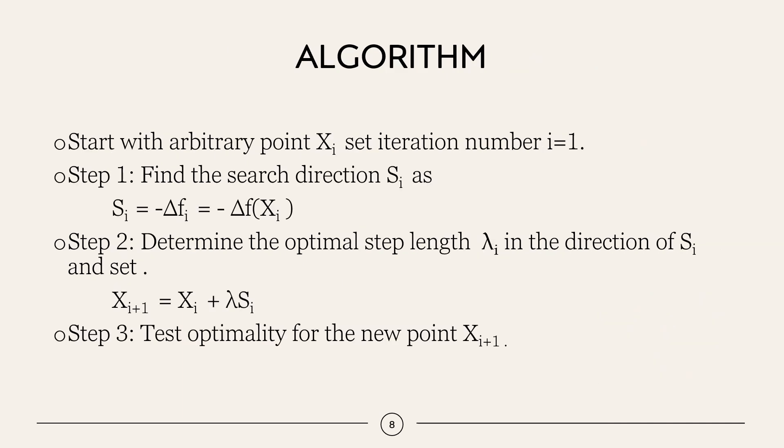Algorithm. Start with an arbitrary point xi. Set the iteration number i equal to 1. Step 1: Find the search direction xi as s equal to minus gradient of fi. Step 2: Determine the optimal step length lambda in the direction of si and set the new point can be calculated as follows: xi+1 equal to xi plus lambda si. Step 3: Test optimality for the new point xi+1.